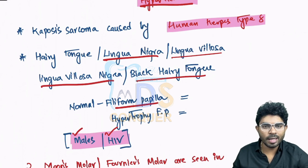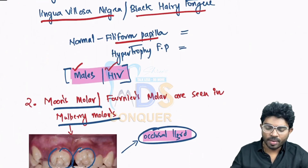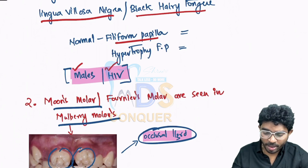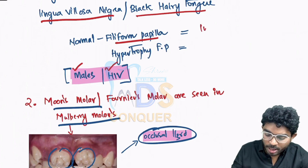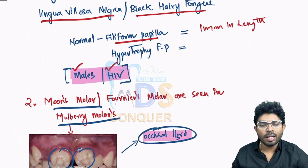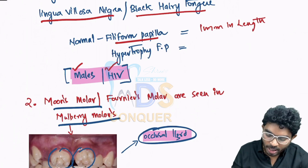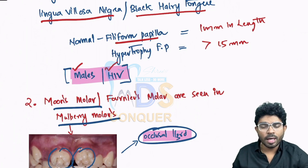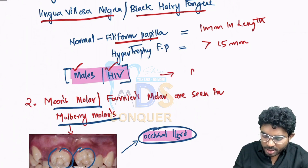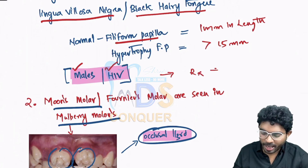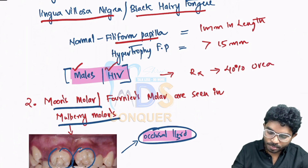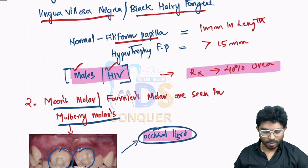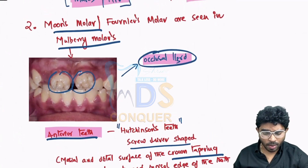Black hairy tongue is also called hairy tongue. Normally, different types of papillae are present on the tongue. The filiform papillae are approximately 1 millimeter in length. But in the case of black hairy tongue, you will have hypertrophy of these filiform papillae, and their length will be more than 15 millimeters. Black hairy tongue is most commonly associated with males as well as HIV positive individuals. The treatment is to brush properly by adding 40% urea.